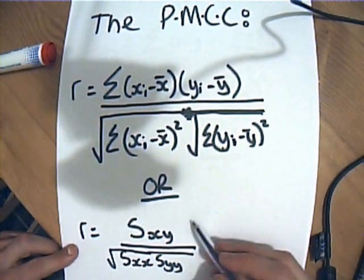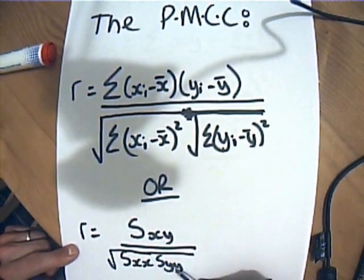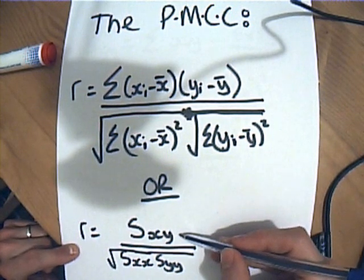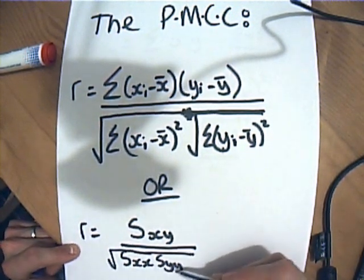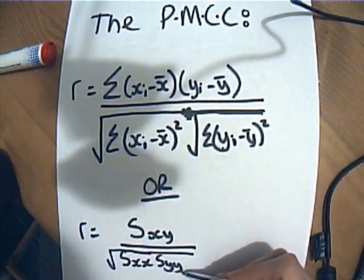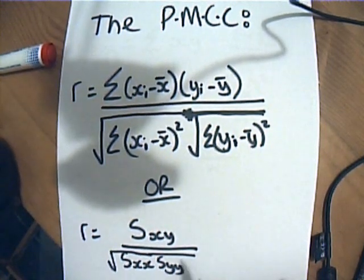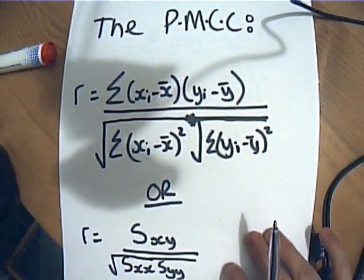And actually, we've come up with a name to sum up these different parts of the formula. We call it S_xy, S_xx, S_yy, or if you're Mr. Lewis, sexy and sex. And we haven't come up with an interesting one for S_yy. But anyway, there is a much easier way of finding this, and that's what I'm about to talk you through.